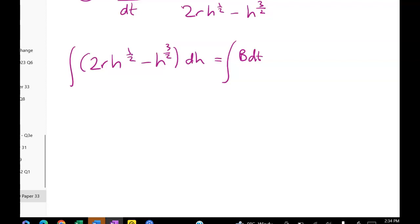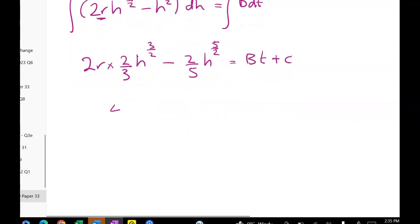And now we have to integrate both sides. So integrating the left hand side, remember R is a constant. So we're going to get 2R times will be H will be to the power of three over two. We have to undo the three over two with two thirds minus two fifths of H to the power of five over two. And I'm going to put my constant on the right hand side. So I get equals BT plus C. Cleaning that up it gives me four thirds R times H to the three over two minus two fifths of H to the five over two is equal to BT plus C.